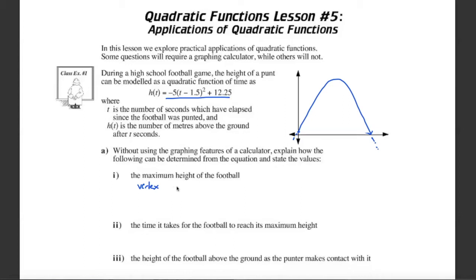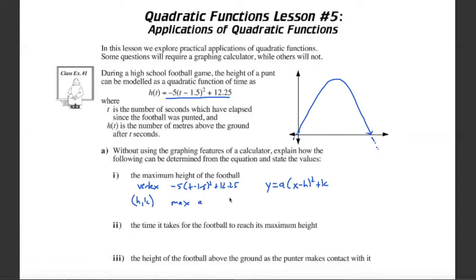Since it's in the form negative 5 times (t minus 1.5) squared plus 12.25, it's in vertex form. Remember this corresponds to y equals a times (x minus h) squared plus k, where h and k give the location of the vertex. So the maximum occurs at x equals 1.5 and has a value of 12.25. The maximum height is 12.25 meters, occurring at 1.5 seconds.